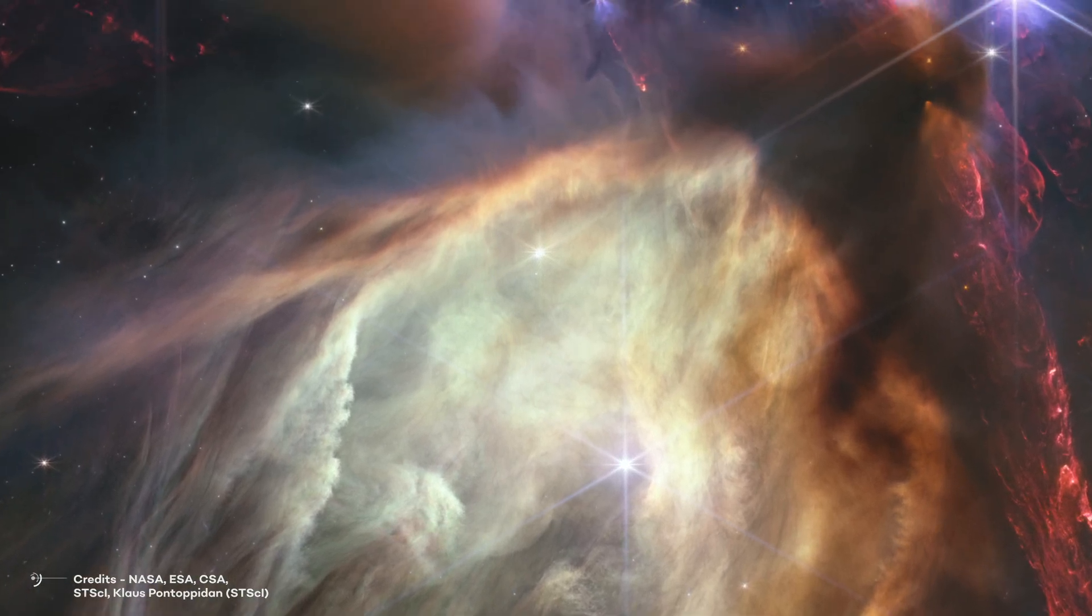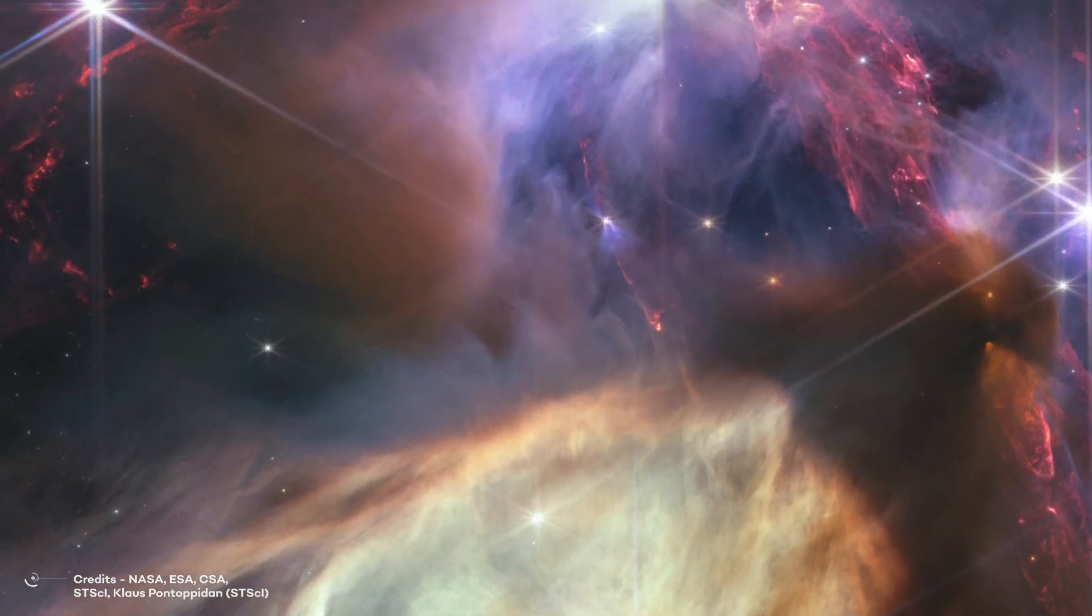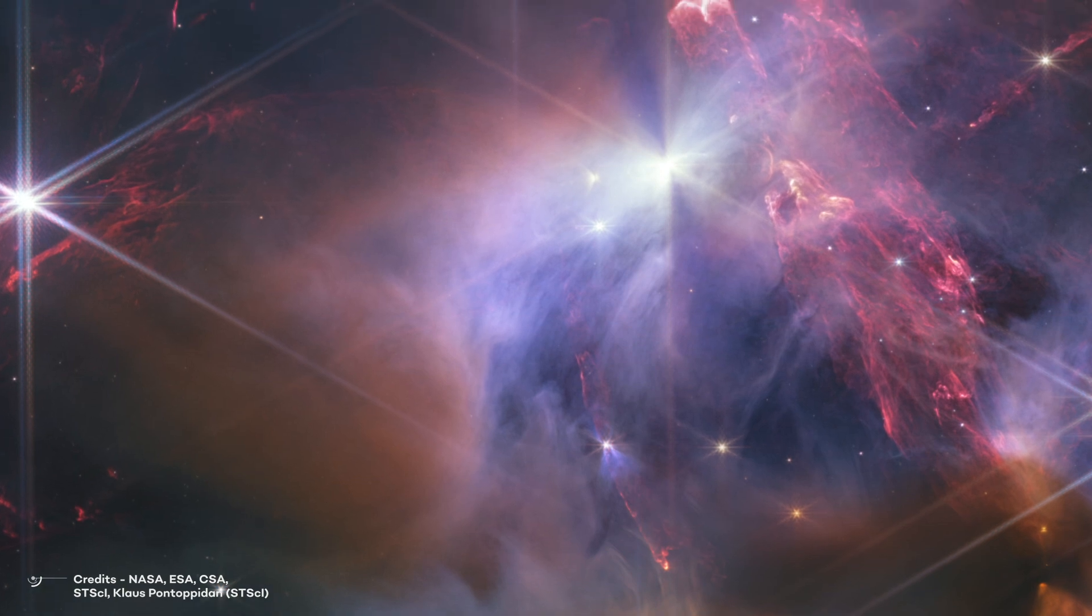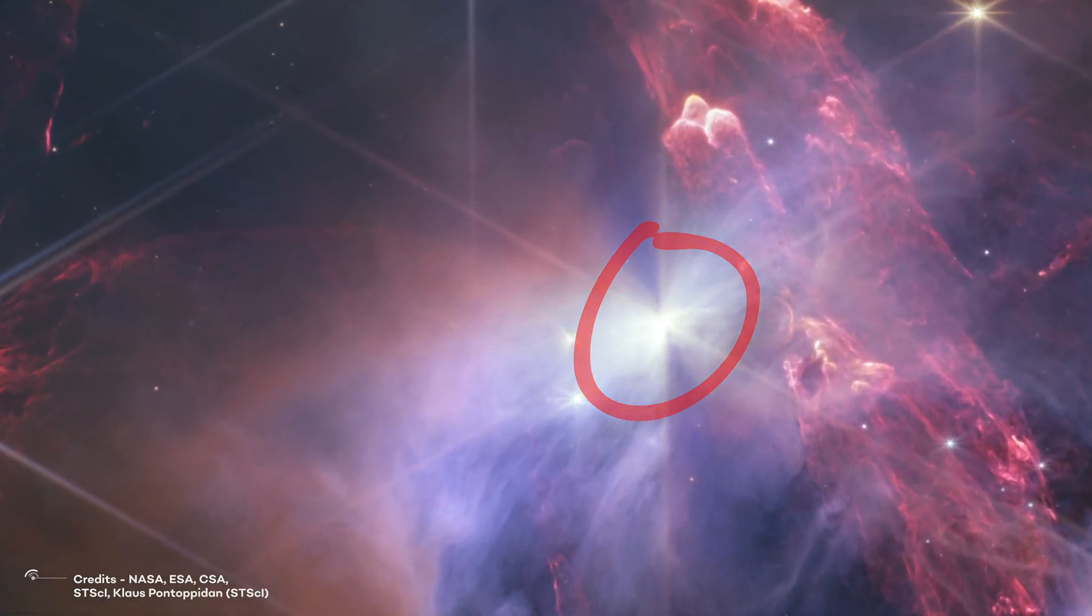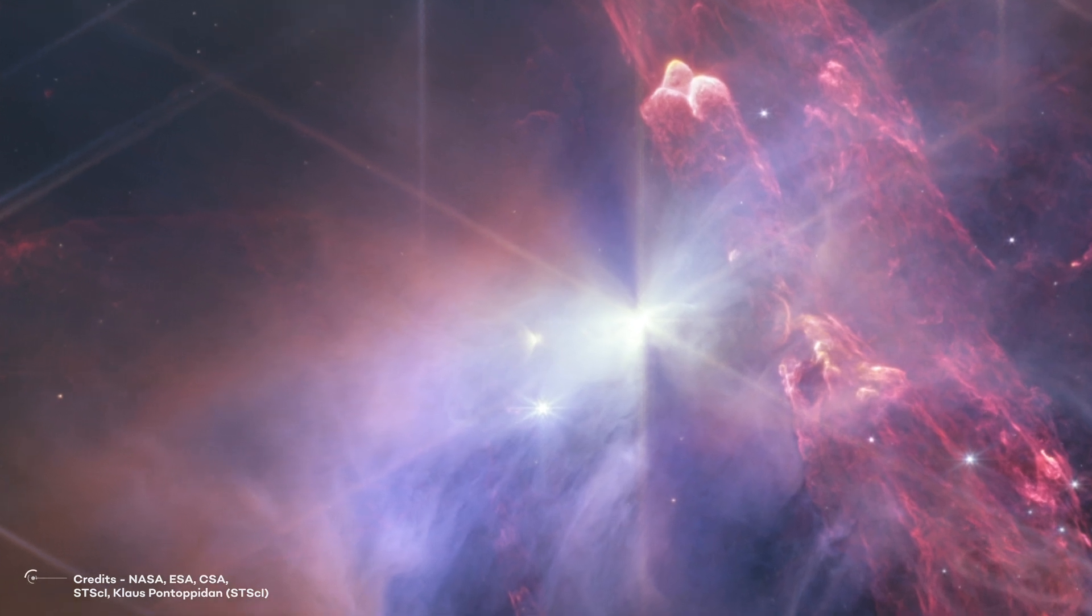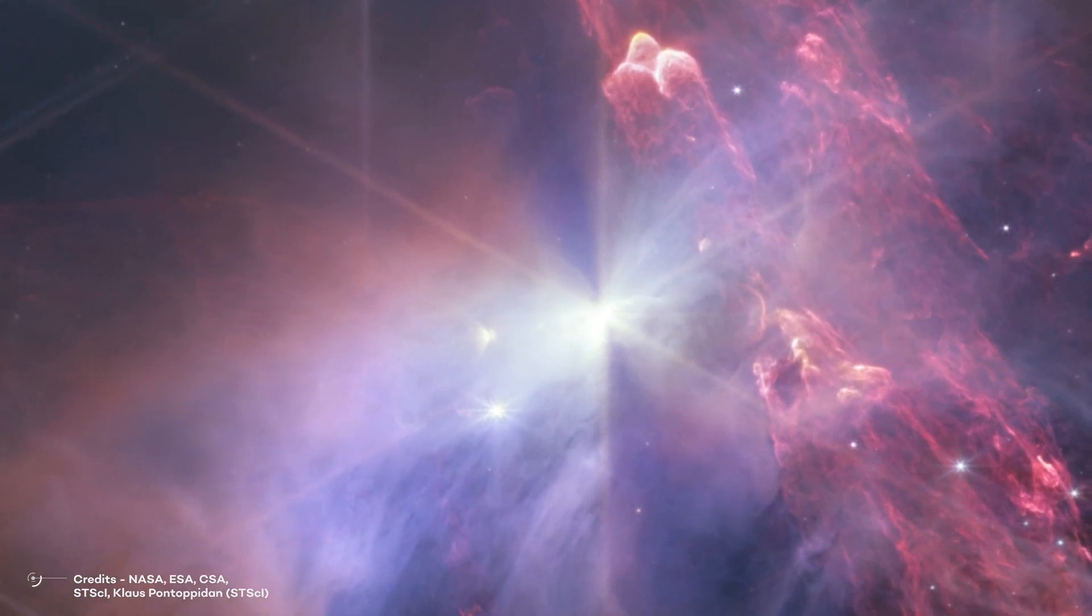Speaking about circumstellar disks, where exactly can you see them? Well, for instance, focus on the top center of the image. There's a star displaying a large vertically-pinched dark shadow. That's its circumstellar disk. But what exactly is it?